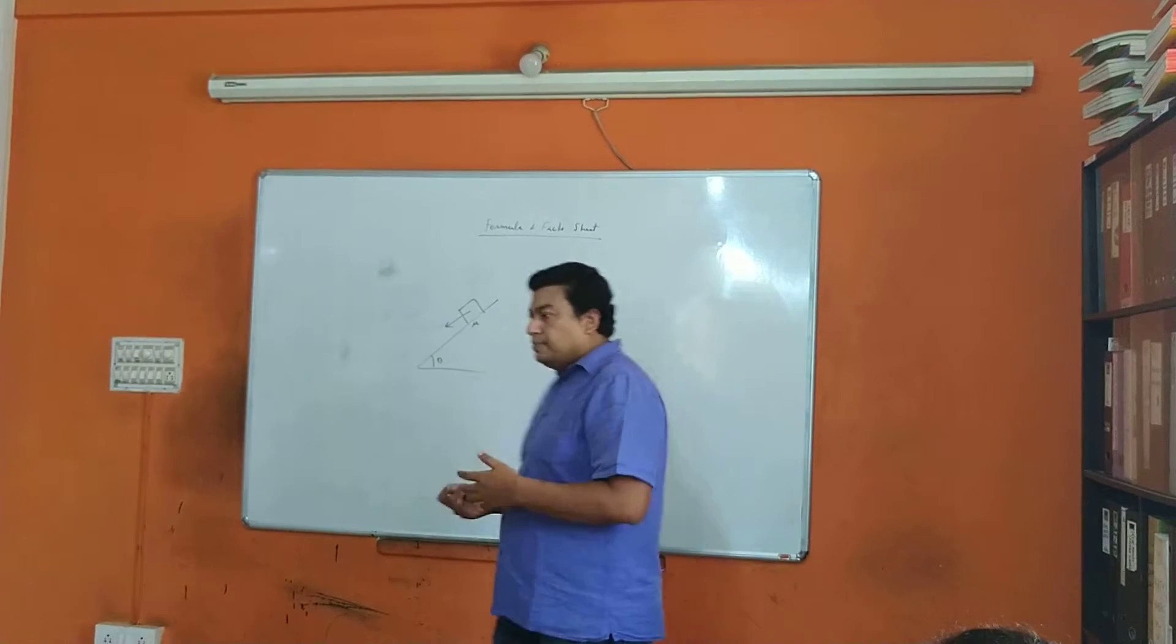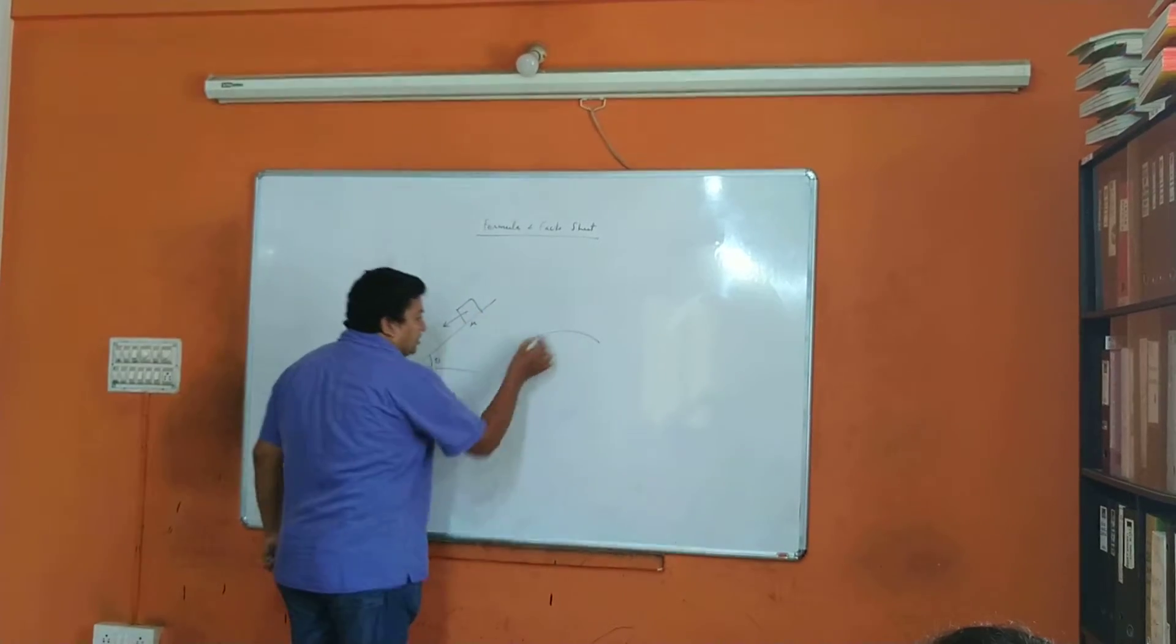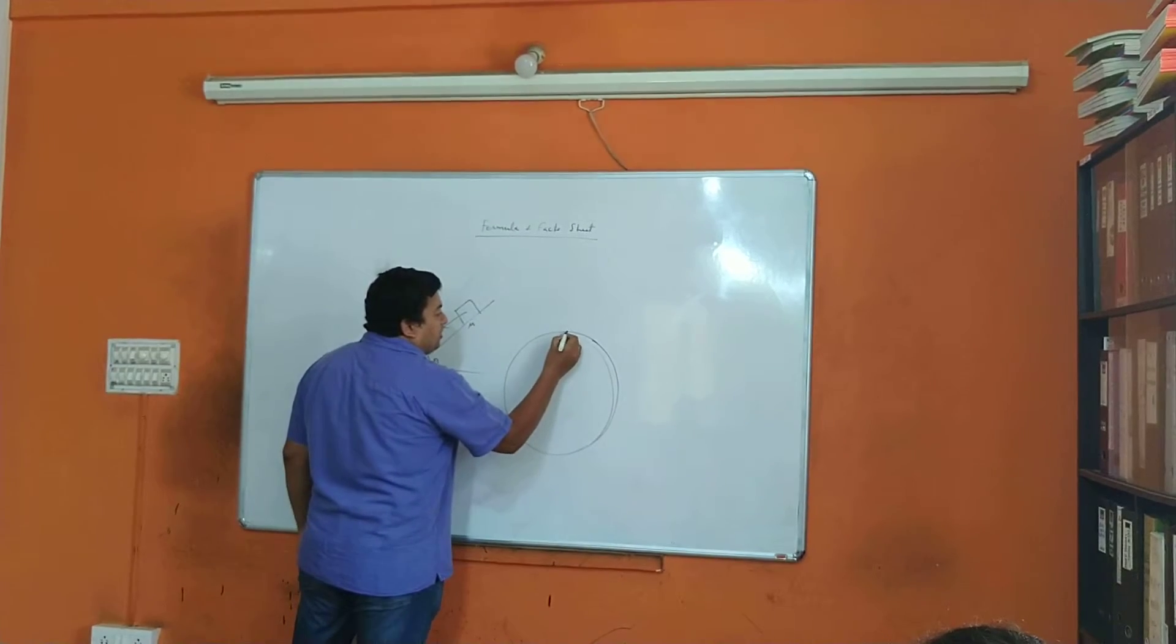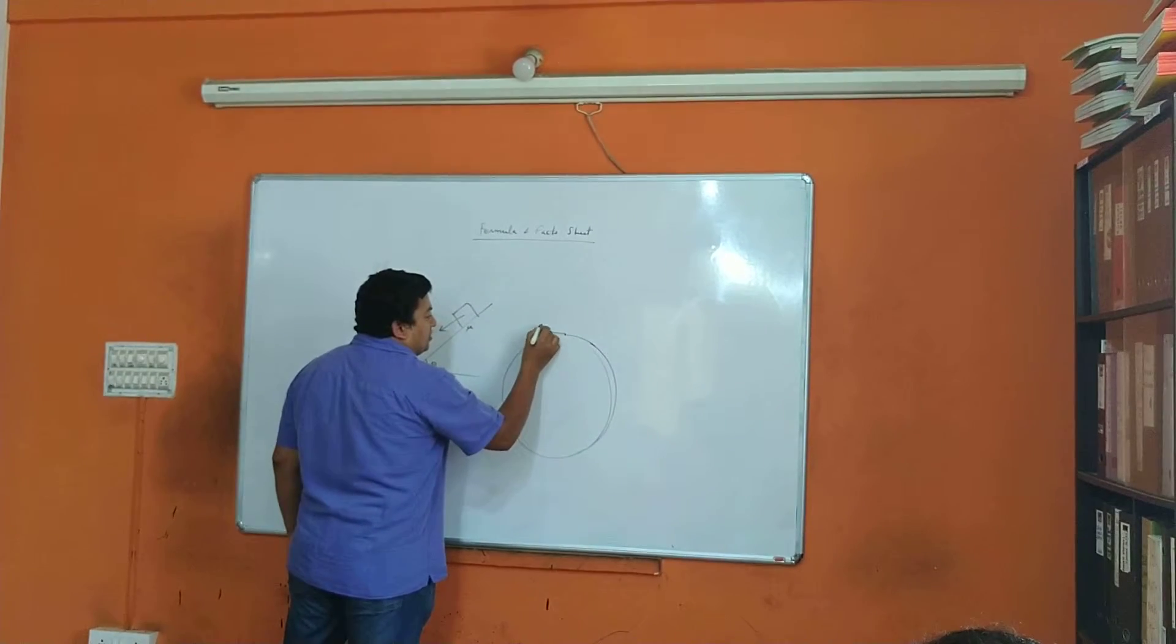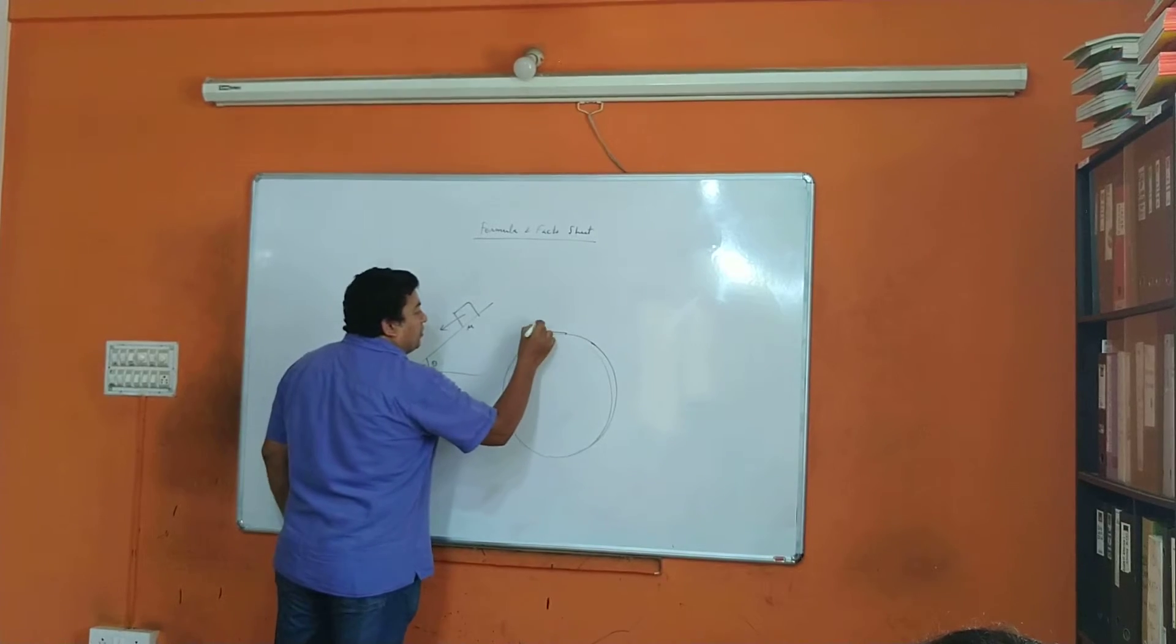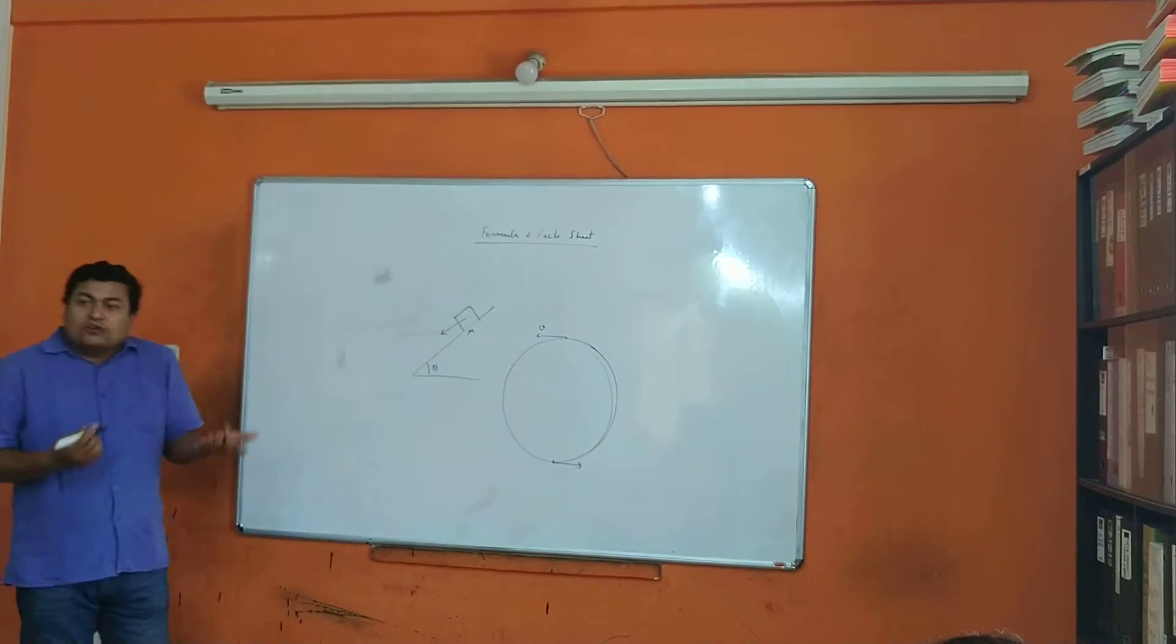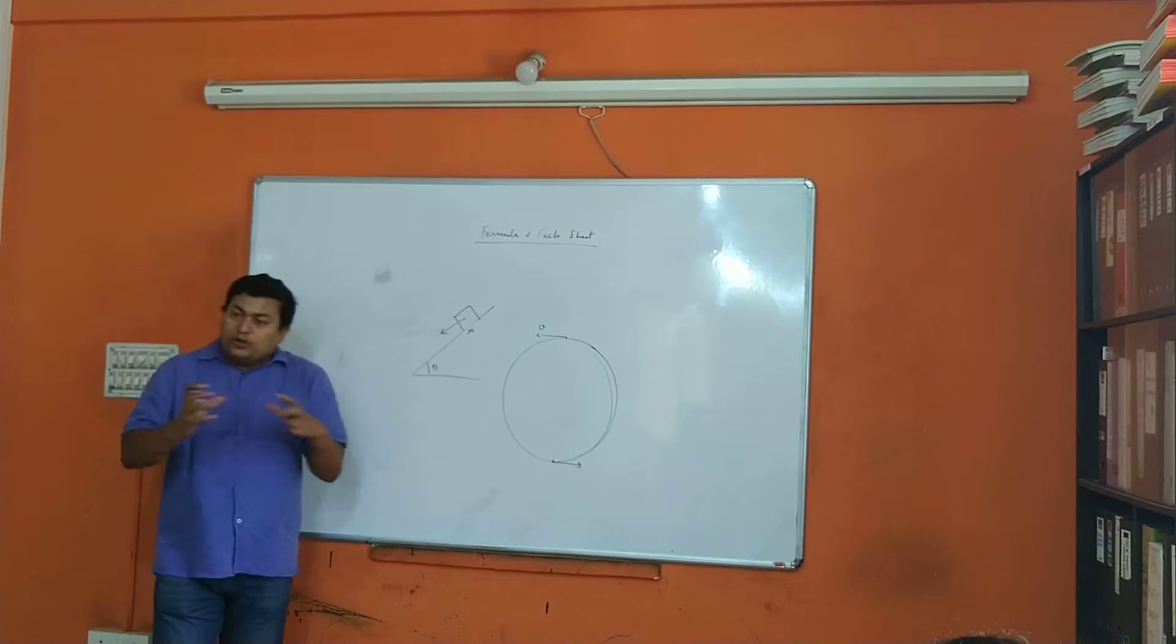And then suppose you have vertical circular motion, and if you are having a body having some velocity v, then what is the kinetic energy here or velocity here? That's also a fact. Like that, there are so many facts.